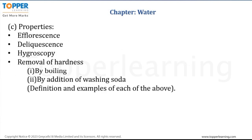Properties such as efflorescence, deliquescence, and hygroscopy are important. Efflorescence is the loss of water of crystallization, while deliquescence is getting dissolved in atmospheric moisture. Both are opposite processes that you have to remember.